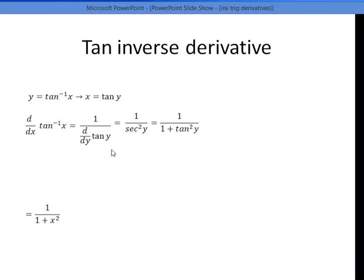Why am I writing this? Because I want to convert it back in terms of tan y. That's equal to 1 over 1 plus tan square y. That's equal to 1 over 1 plus x square because x is equal to tan y.